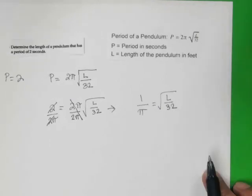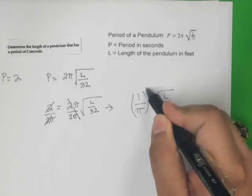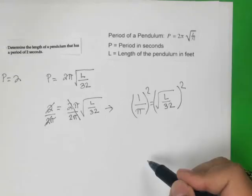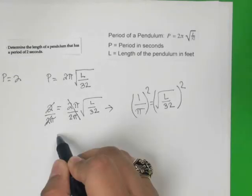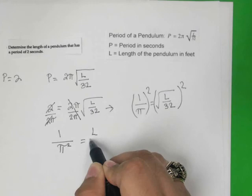Now, we need to square both sides to get rid of the square root. 1 squared is 1, and pi squared is just pi squared. That's going to equal L over 32.